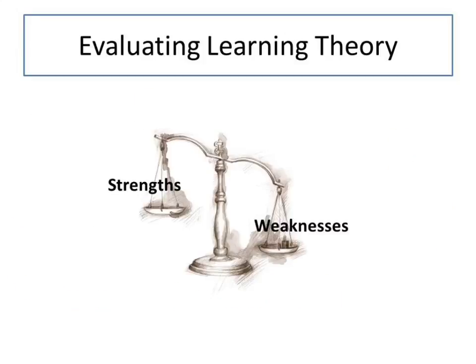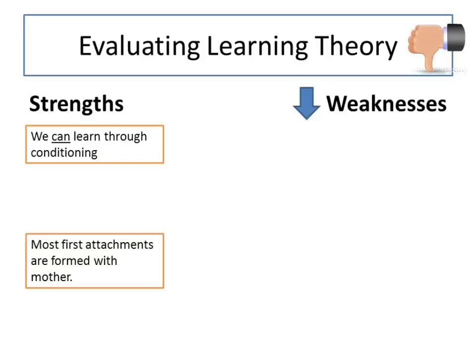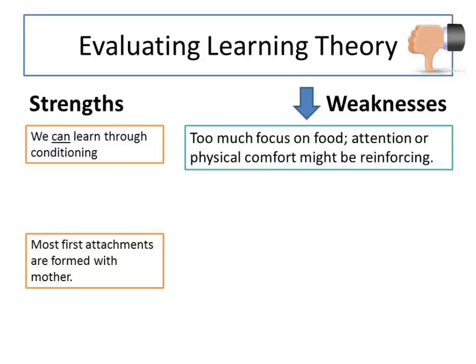The weaknesses of learning theory as an explanation of attachment, however, seem to outweigh the strengths. The assumption that food is a central feature of attachment development seems to be the biggest problem for the theory. Attachments might be learned, but this does not necessarily mean that food is the pleasure-providing stimulus. Attention from the caregiver or physical comfort from cuddling might also be reinforcing.